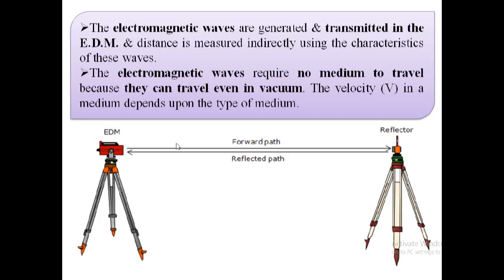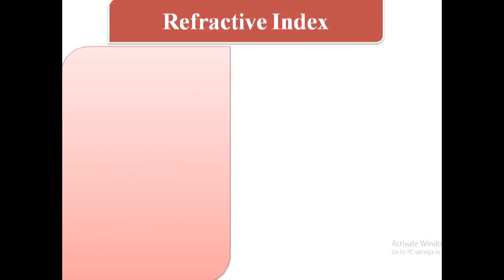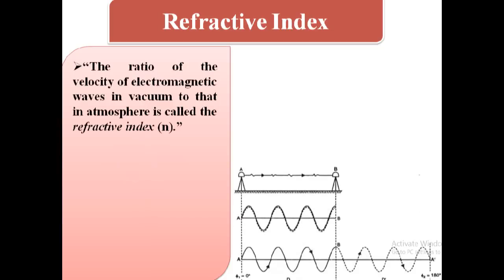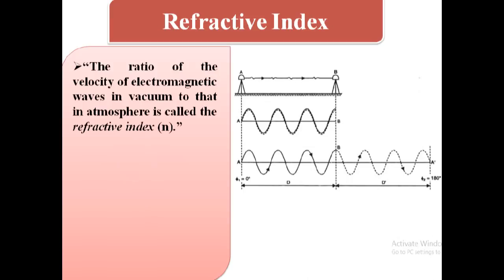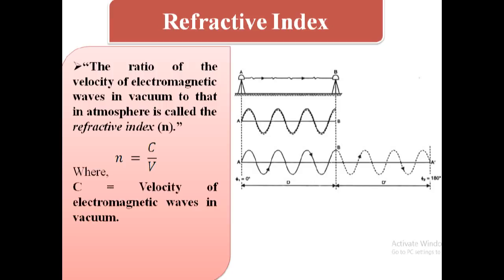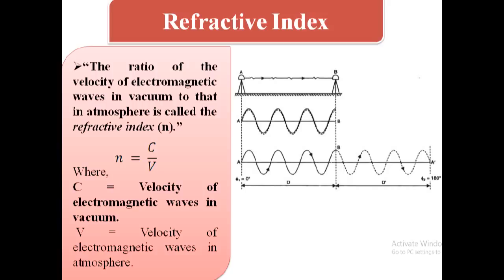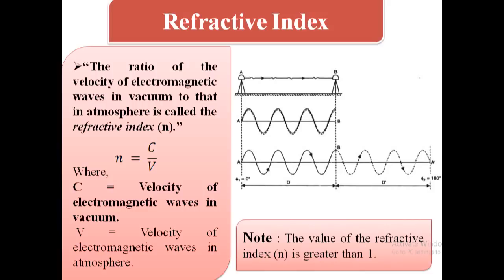The electromagnetic waves require no medium to travel because they can travel even in vacuum. The velocity V in a medium depends upon the type of medium. The ratio of the velocity of electromagnetic waves in vacuum to that in atmosphere is called the refractive index, and it is denoted by N. N is equal to C divided by V, where C is the velocity of electromagnetic waves in vacuum and V is the velocity of electromagnetic waves in atmosphere. Note that the value of the refractive index N is greater than 1.